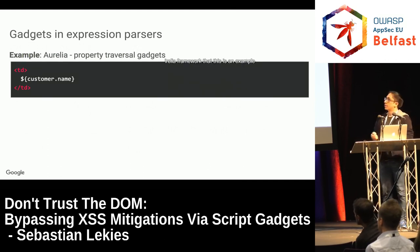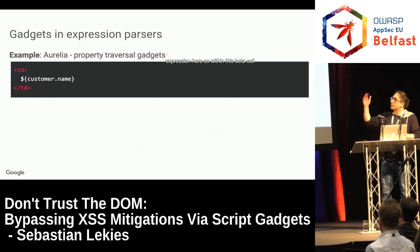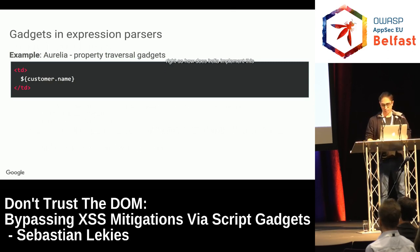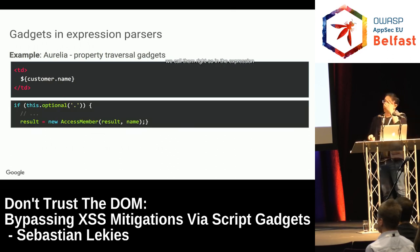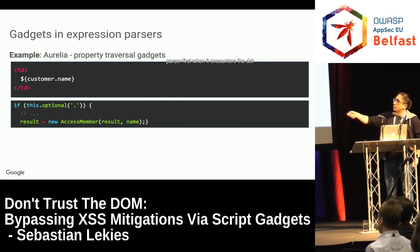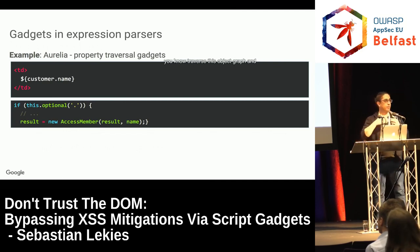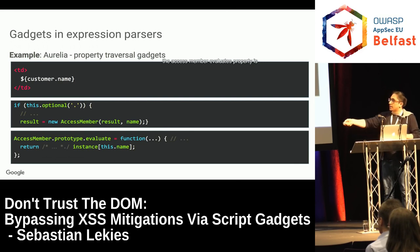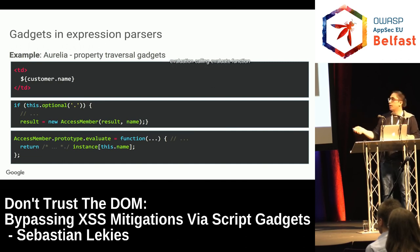Let's see an example with the Aurelia framework. Here is an expression language expression in a data cell to just output the customer's name. How does Aurelia implement this? In the expression parser, when it encounters a dot symbol from 'customer.name,' it creates a new object called AccessMember so it can later traverse the object graph and execute those members. When this expression is evaluated, the AccessMember evaluates properties: it returns a property of an object, so here it would return the value of the customer's name property.